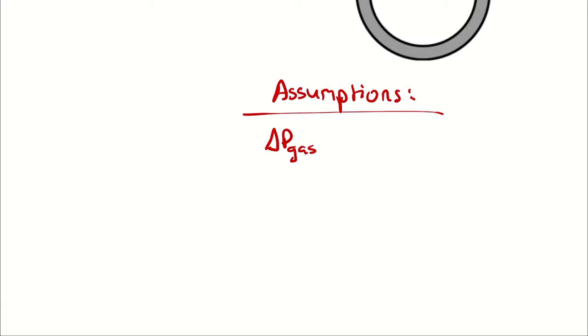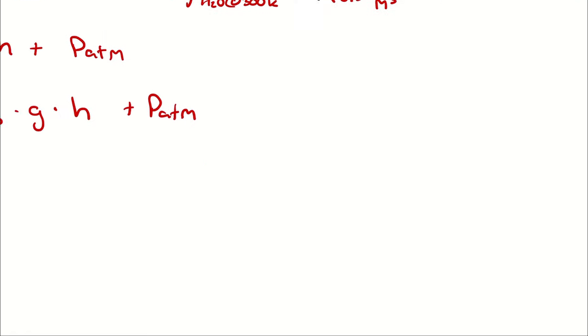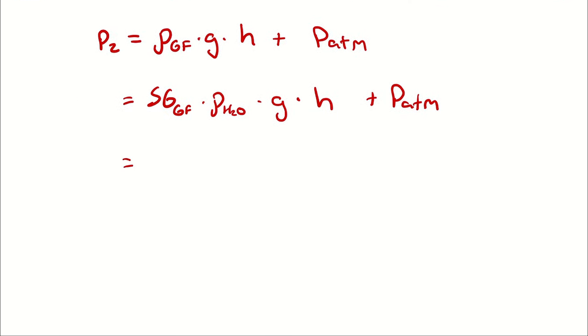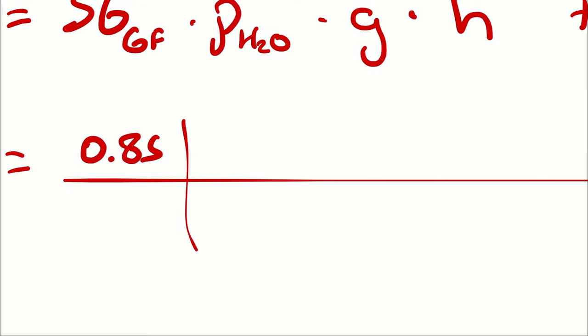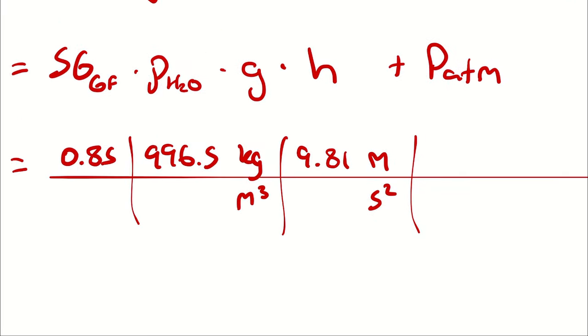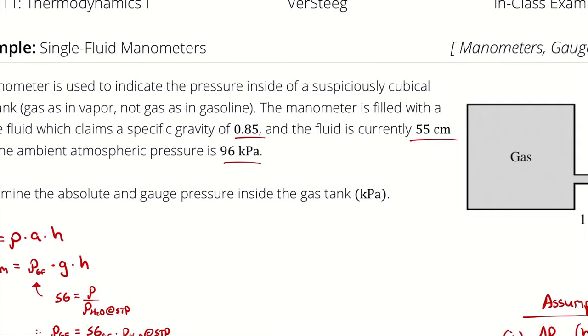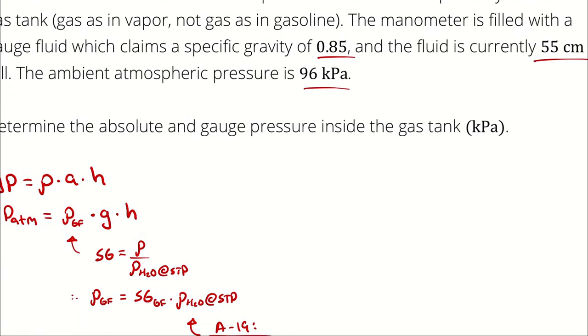The pressure change of the gas has a function of height. That was our first assumption, and I will dutifully note it. Then I'm also going to say gravity is about 9.81 meters per second squared. We have 0.85 multiplied by 996.5 kilograms per cubic meter multiplied by 9.81 meters per second squared. And then our height was 55 centimeters. And we are going to be adding that result to our ambient atmospheric pressure, which was 96 kilopascals.